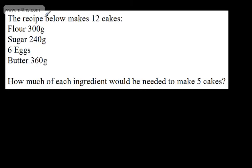In the second question, we're told the recipe below makes 12 cakes. We've got 300 grams of flour, 240 grams of sugar, 6 eggs, 360 grams of butter. We're asked how much of each ingredient would be needed to make 5 cakes.